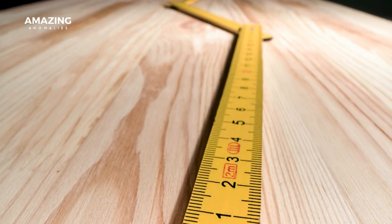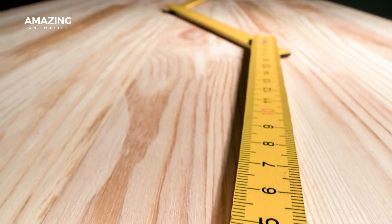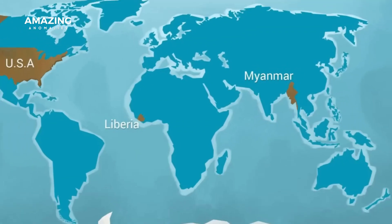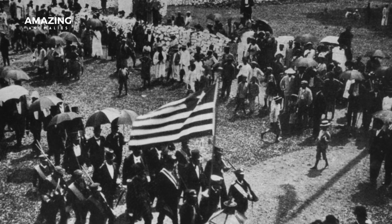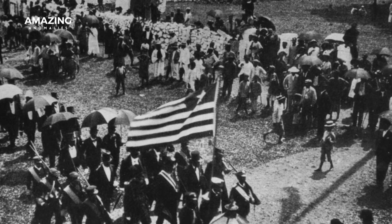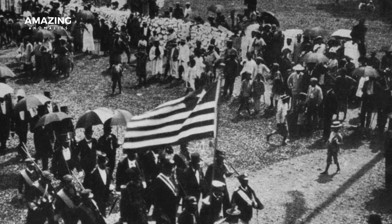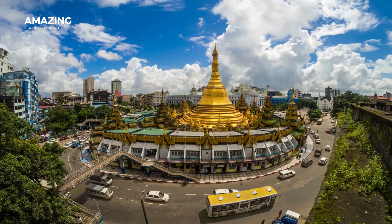There are over 195 countries in the world, and all use the metric system except for three: the U.S., Liberia, and Myanmar. Of these, Liberia is a former colony of the United States, so it inherited the measurement system of the mother country.